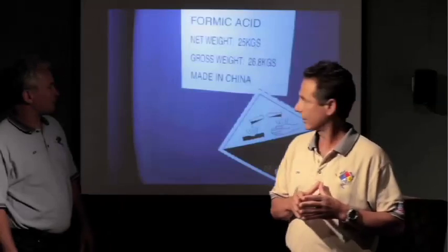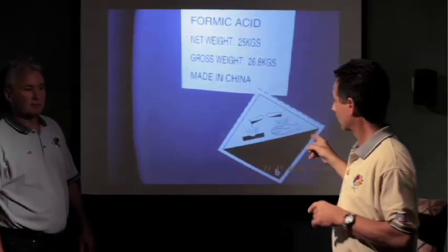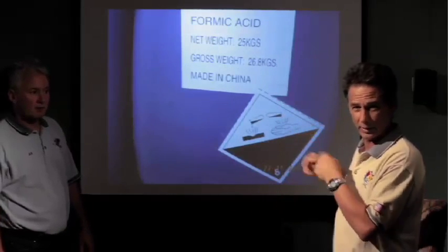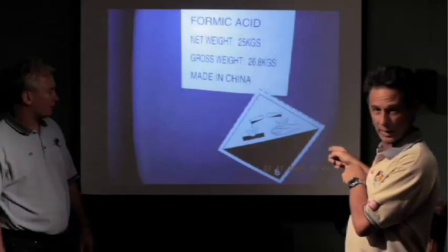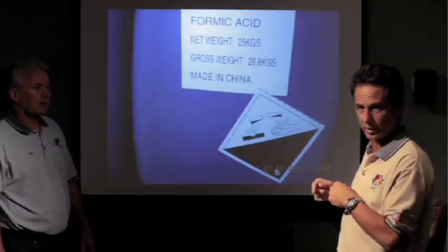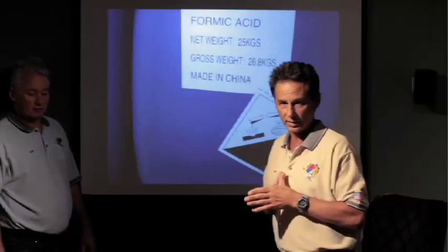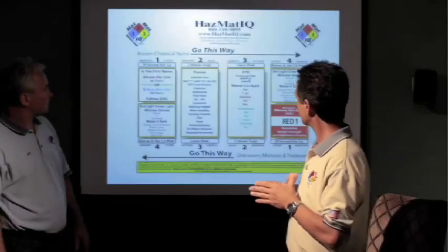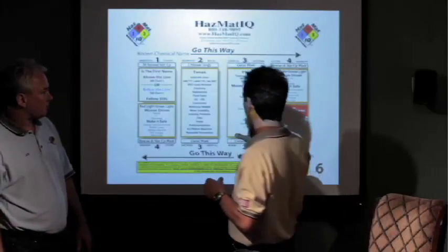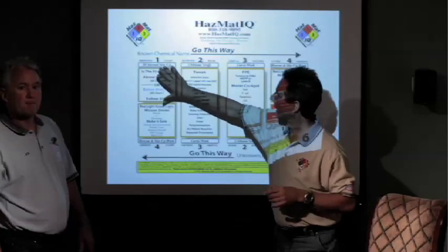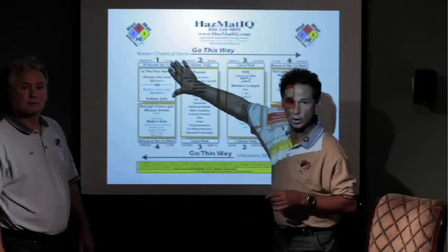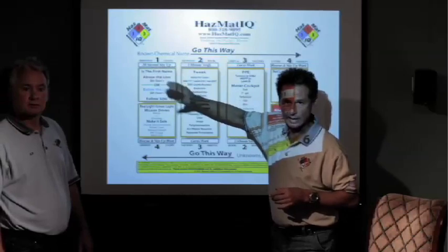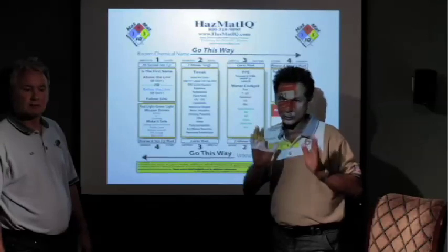The first chemical we're going to talk about is formic acid. Remember we talked about in class that poly drum is a clue that this is a corrosive. The label confirms it, but we're still going to bring our instruments. Based on the HazMat IQ system, step number one: I'm dispatched, I will use the chart within 20 seconds, save it above or below the line, and try to come up with the playbook.